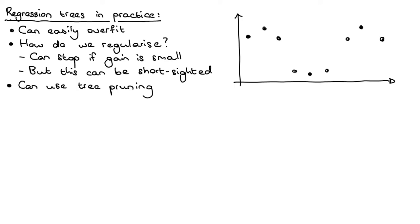Before we split, we're going to assign the average value to all of the points in that region — so maybe the average looks something like this. The value of the loss will be the sum of squared distances from each point to that average, and then we consider every single split point and look for the best one.